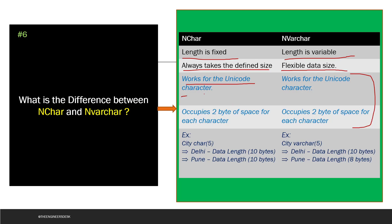For NCHAR(5) storing 'Delhi' (5 chars): 5 × 2 = 10 bytes. For 'Pune' with NCHAR(5), it still takes 10 bytes due to fixed length. For NVARCHAR(5), 'Delhi' takes 10 bytes (5 × 2), but 'Pune' takes only 8 bytes (4 × 2) because NVARCHAR uses variable storage.